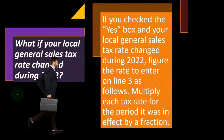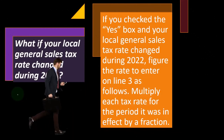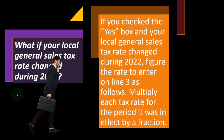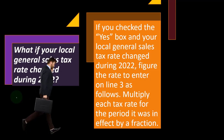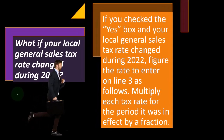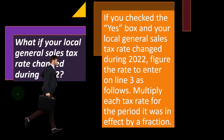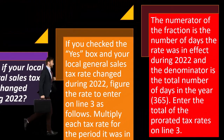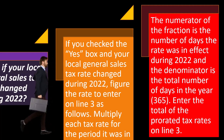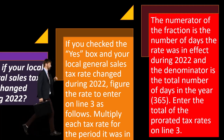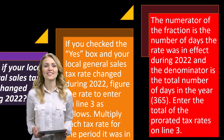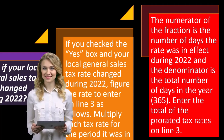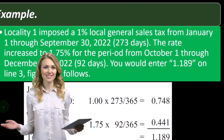So if you check the yes box and your local general sales tax rate changed during 2022, figure the rate to enter on line three as follows: multiply each tax rate for the period it was in effect by a fraction. You've got a fraction of the year at one rate versus another rate. The numerator of the fraction is the number of days the rate was in effect during 2022, and the denominator is the total number of days in the year — 365. Enter the total of the prorated tax rates on line three.